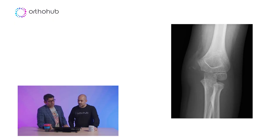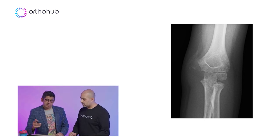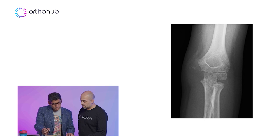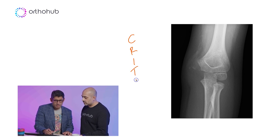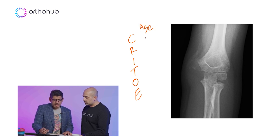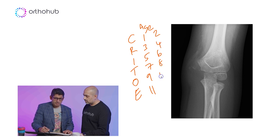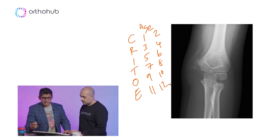So this is an AP radiograph of the elbow, and these can be more complicated than people give them credit for. The first thing you want to know is the age of the child, because you're going to look for the capitellum, the radial head, the internal epicondyle, the trochlear, the olecranon, and the external epicondyle. Then you look at their age - depending which books you read, it could be 1, 3, 5, 7, 9 and 11, or 2, 4, 6, 8, 10 and 12. So once you know the age of the child, you know what you're looking for and you can actually age the child themselves.